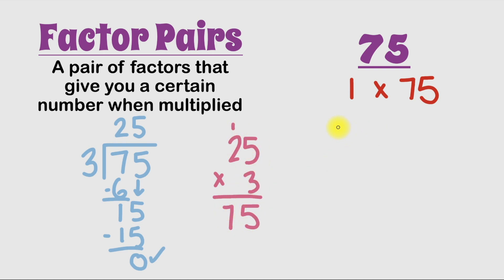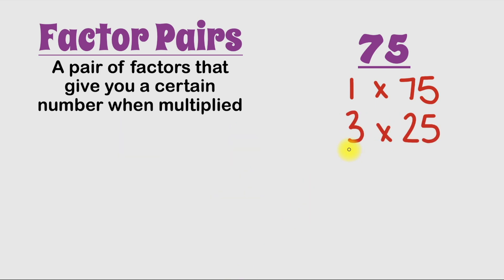So let's put 3 times 25 as our next factor pair. So we know 3 can go into 75. 4 can't go into 75. But because 75 ends with a digit 5, that means 5 is definitely a factor of 75. And how many times can 5 go into 75?